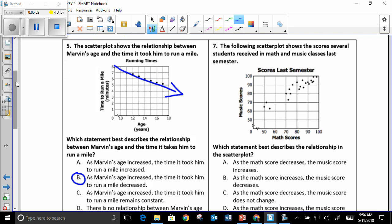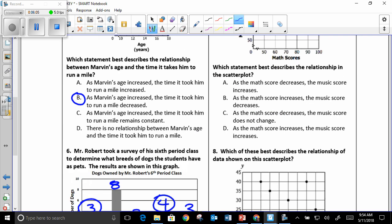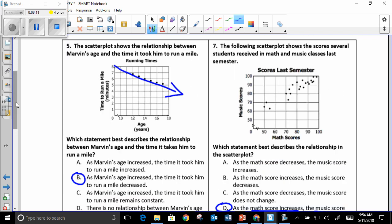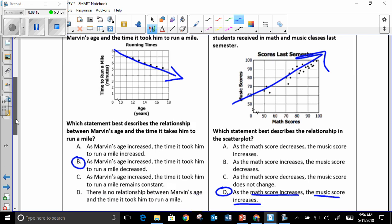Number seven, here's another scatter plot. These are scores several students received in math and music classes last semester. Which statement best describes? It is D. As the math score increases, the music score increases. That is going to give you a positive trend. As one increases, the other increases.